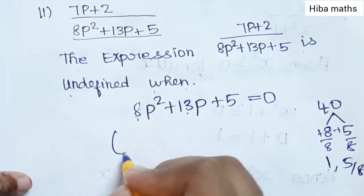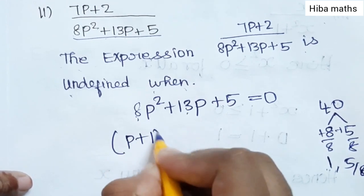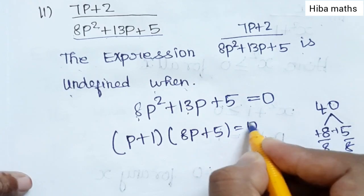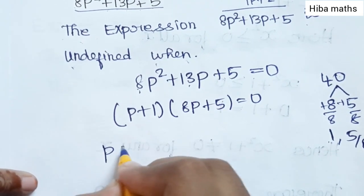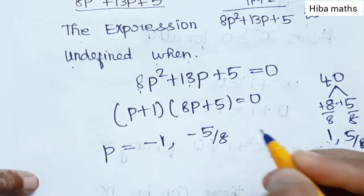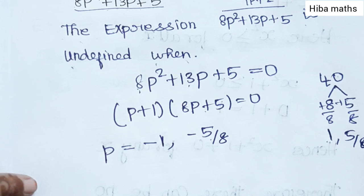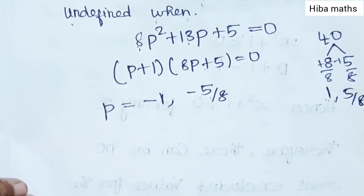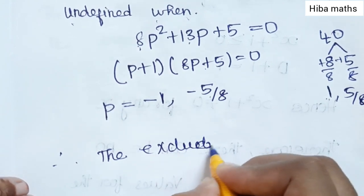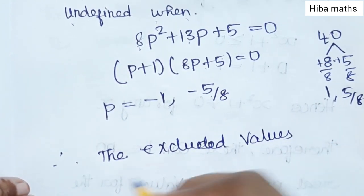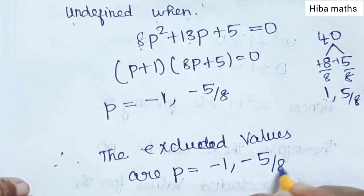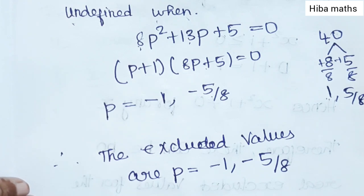So (p + 1)(8p + 5) = 0. Now p is equal to minus 1, and 8p + 5 = 0 gives p = minus 5 by 8. The two values come to be undefined. Therefore the excluded values are p = −1 and p = −5/8. This is the answer for question 2.